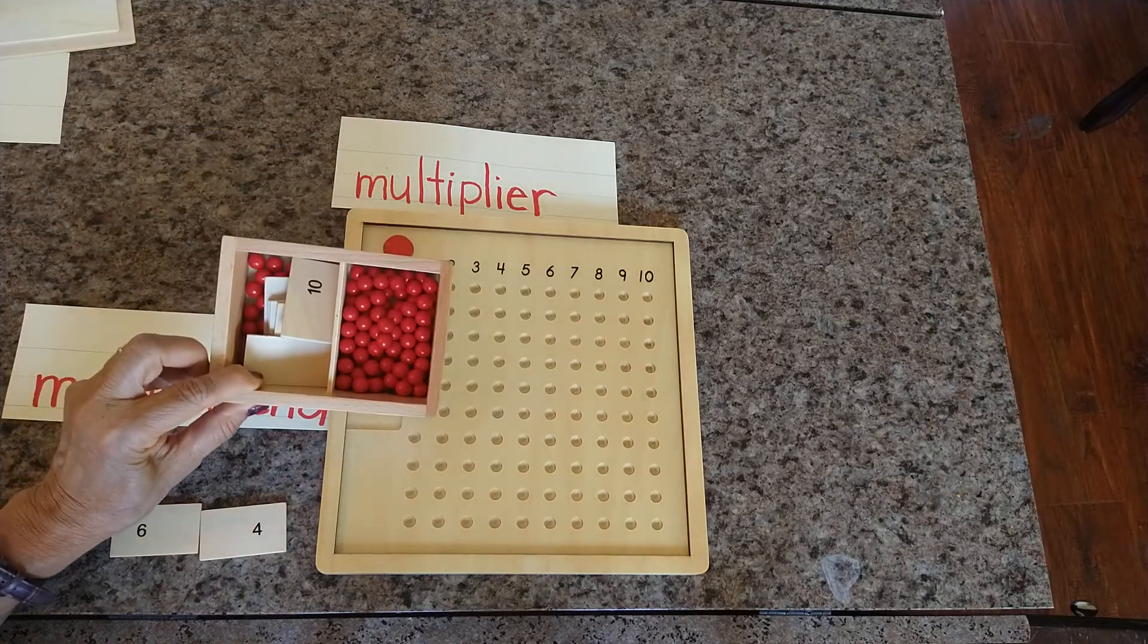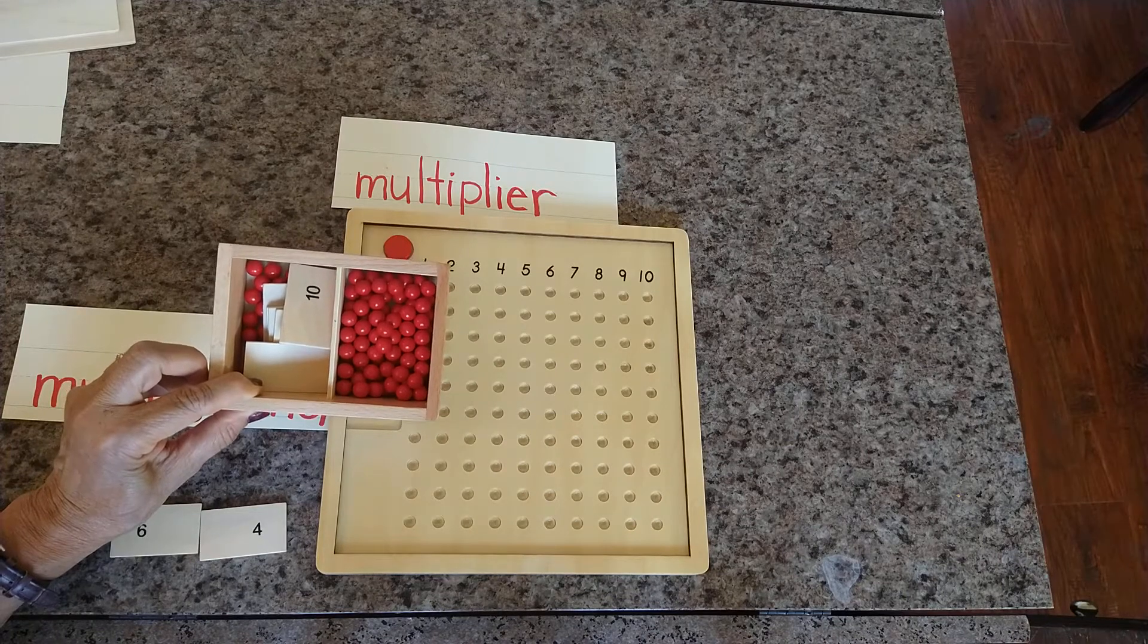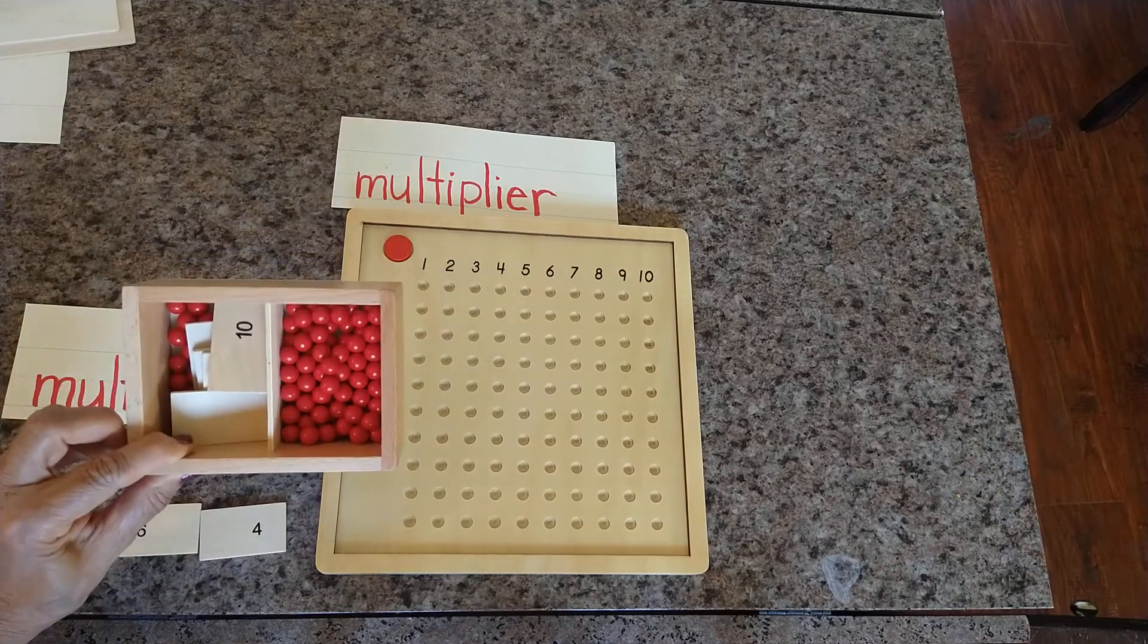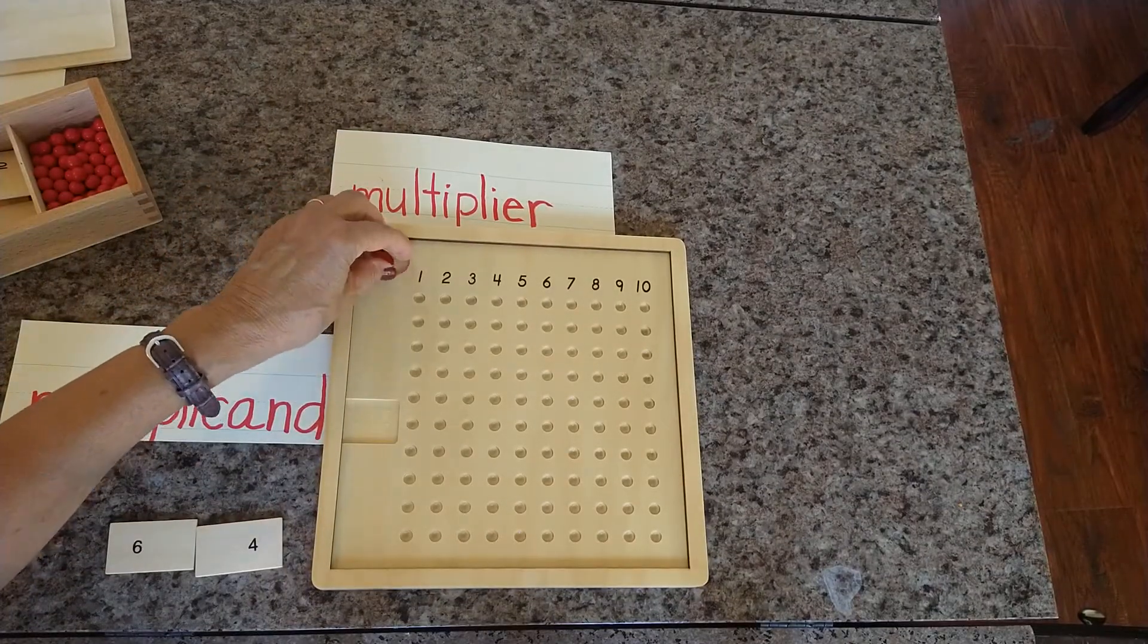So I have here a box. It has 100 red beads in it and numerals 1 to 10, and here is the disk which tells us which numeral is the multiplier.